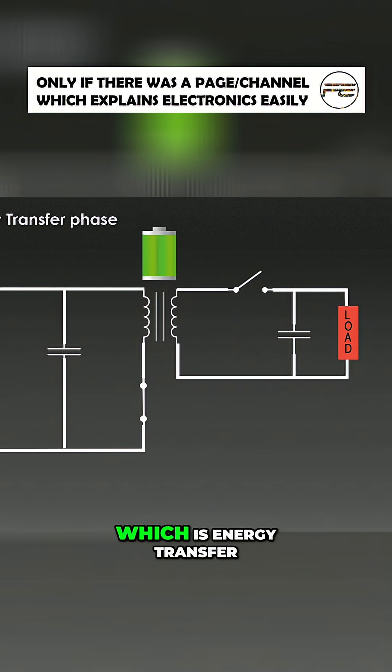In the next phase, which is energy transfer, when the MOSFET is turned off, the magnetic field in the transformer collapses.